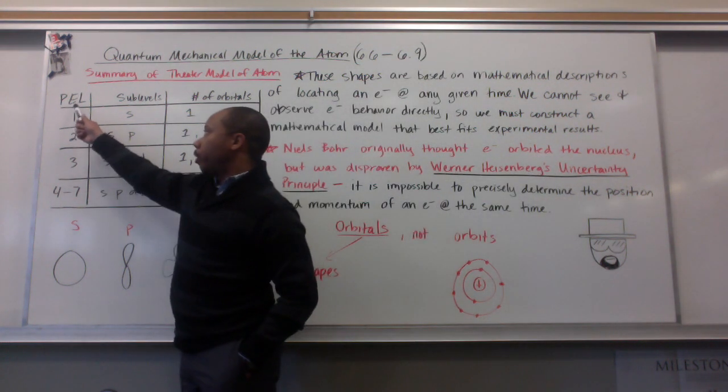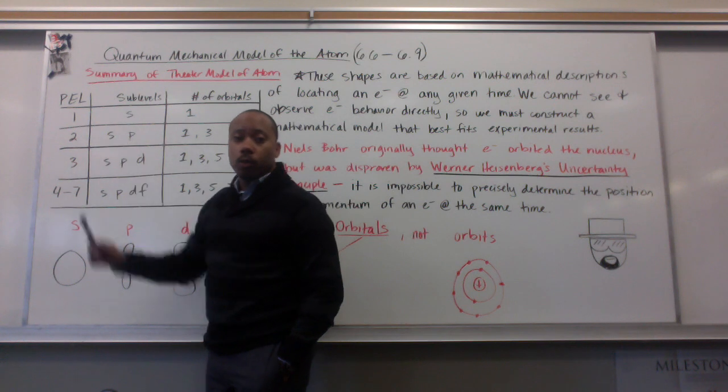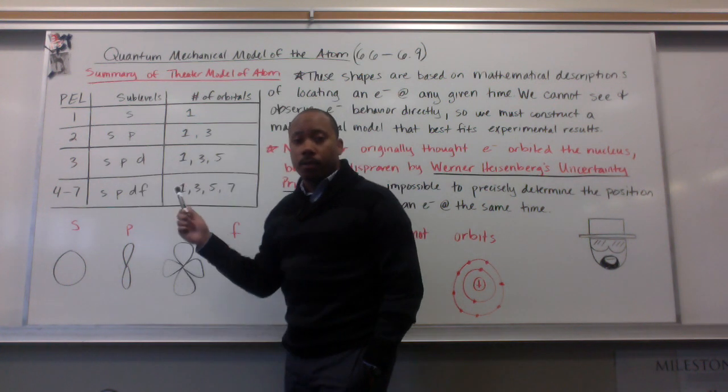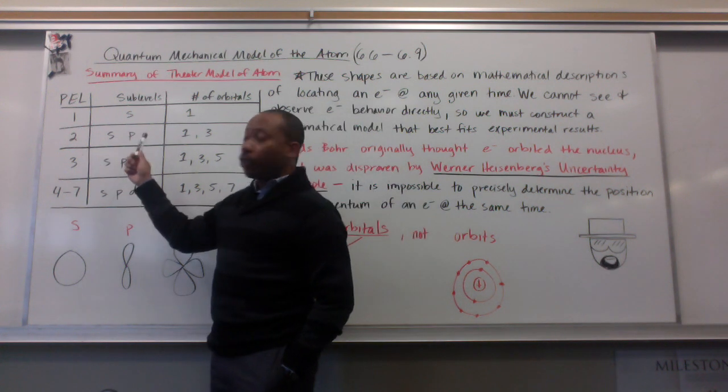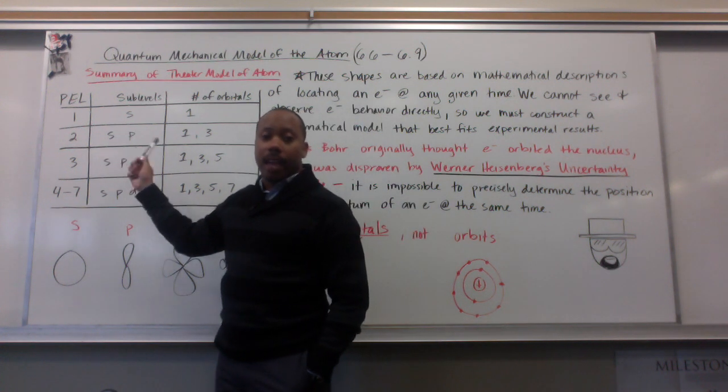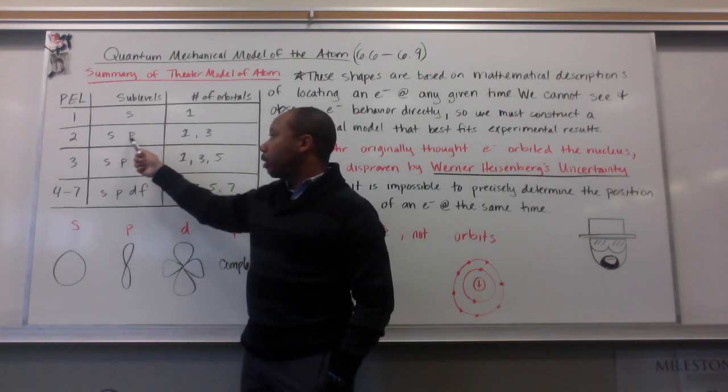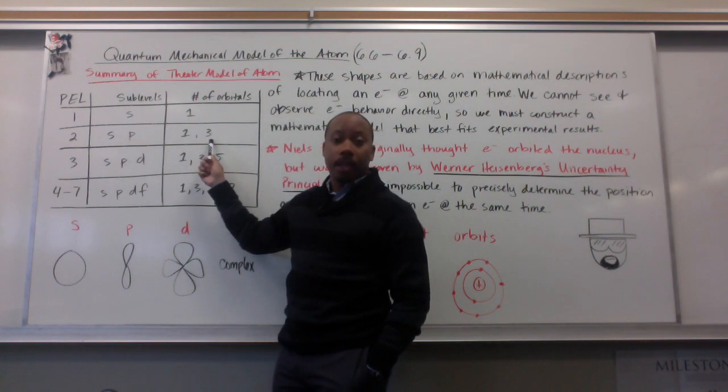In the first energy level, our principal energy level, we had one sub-level, which was the S-sub-level, and the S-sub-level has one orbital. In the second energy level, we have two sub-levels, S and P. The S-sub-level has one orbital. The P-sub-level has three sub-levels, PX, PY, and PZ.